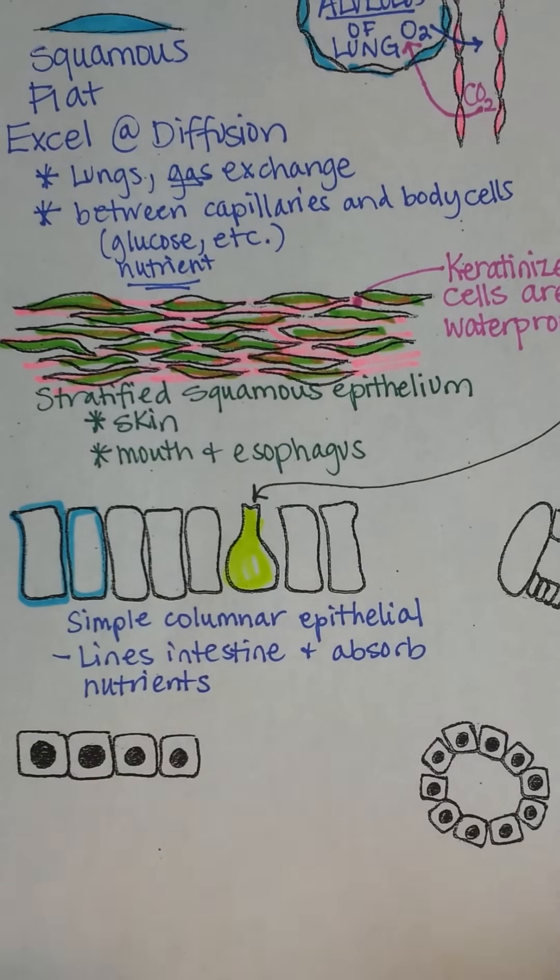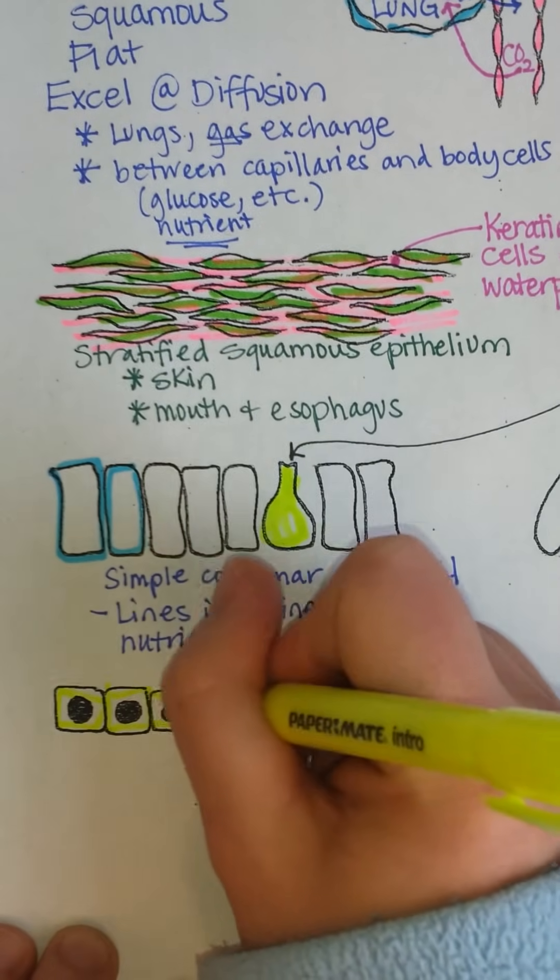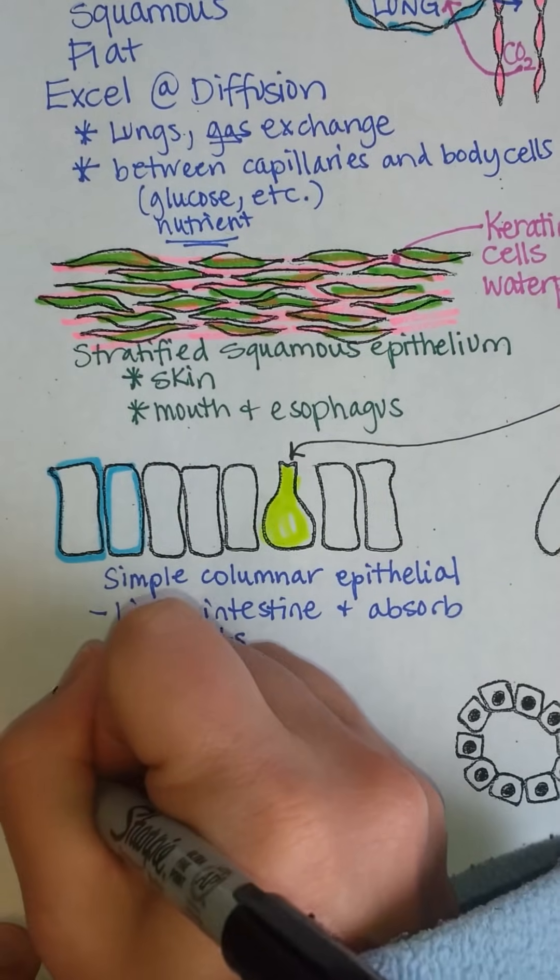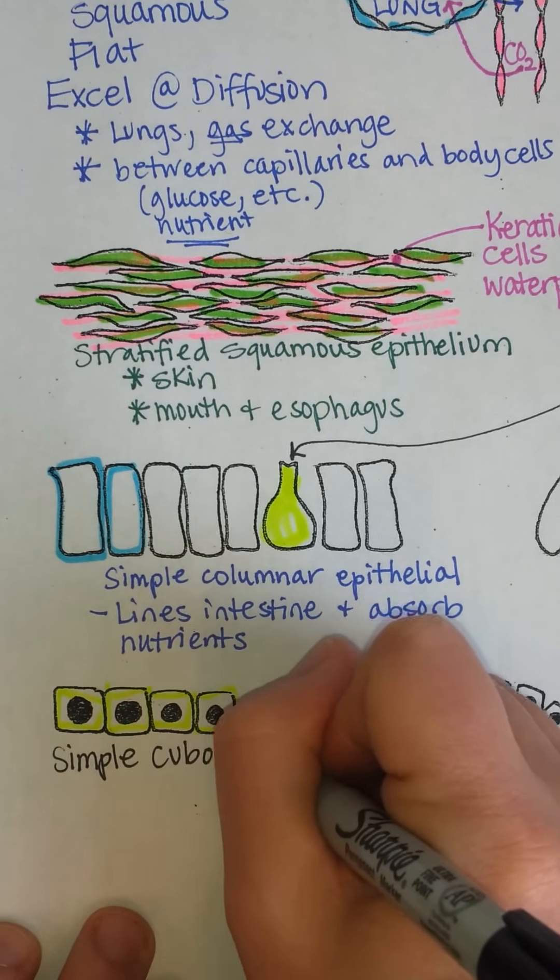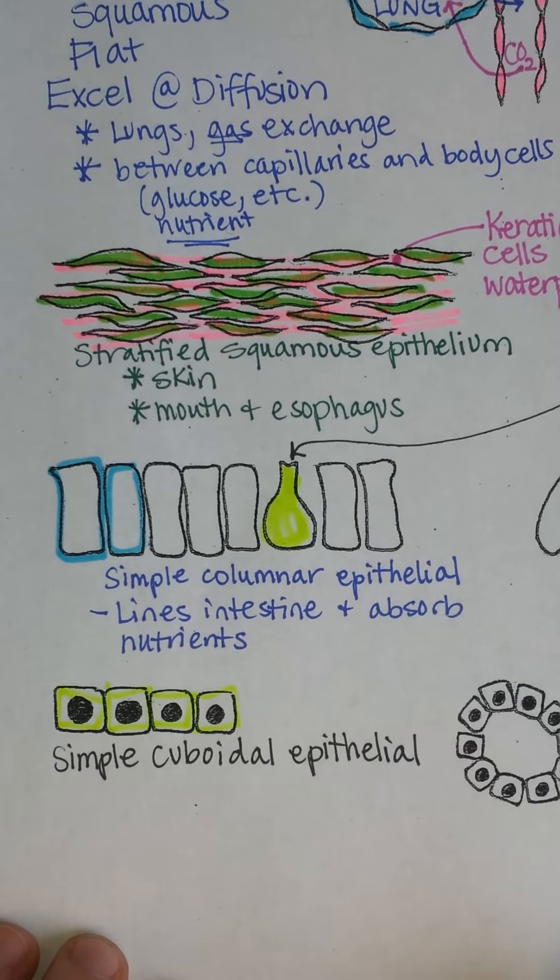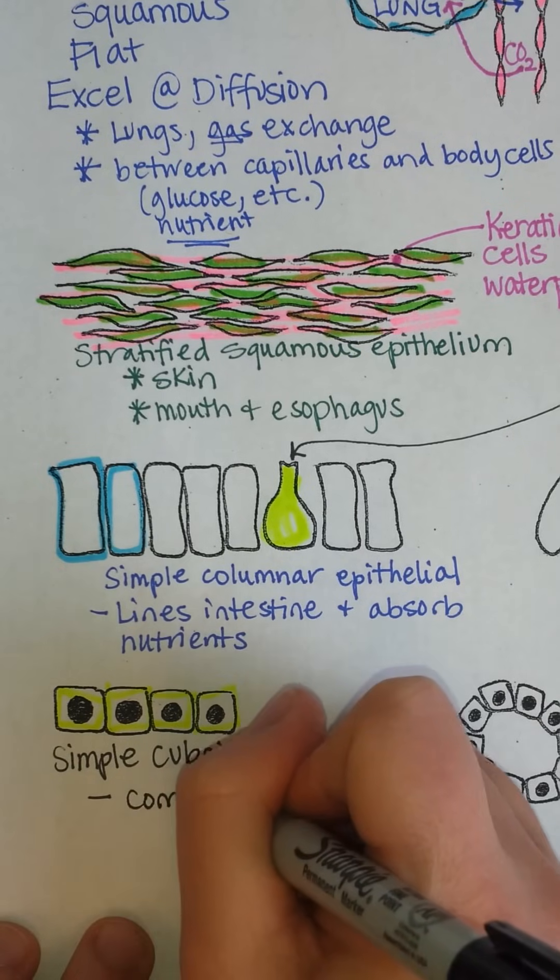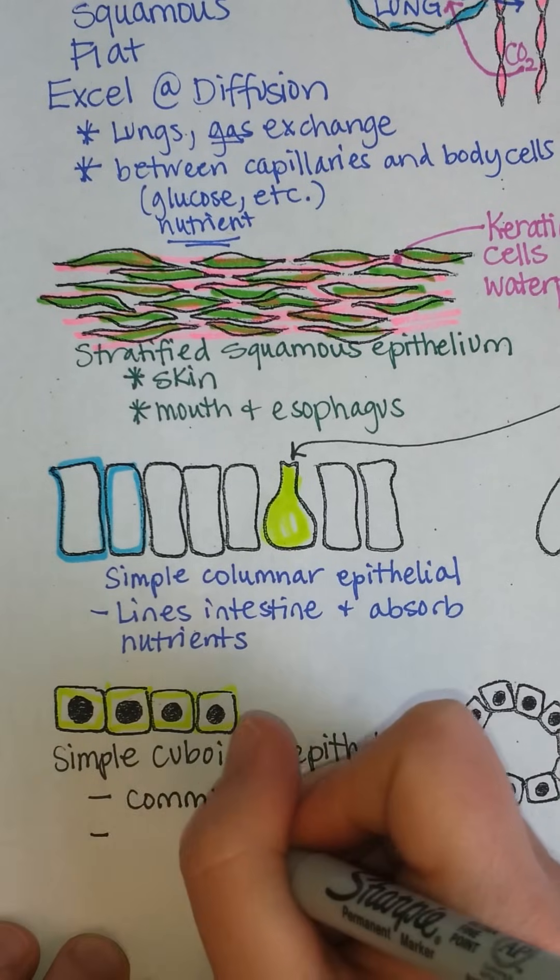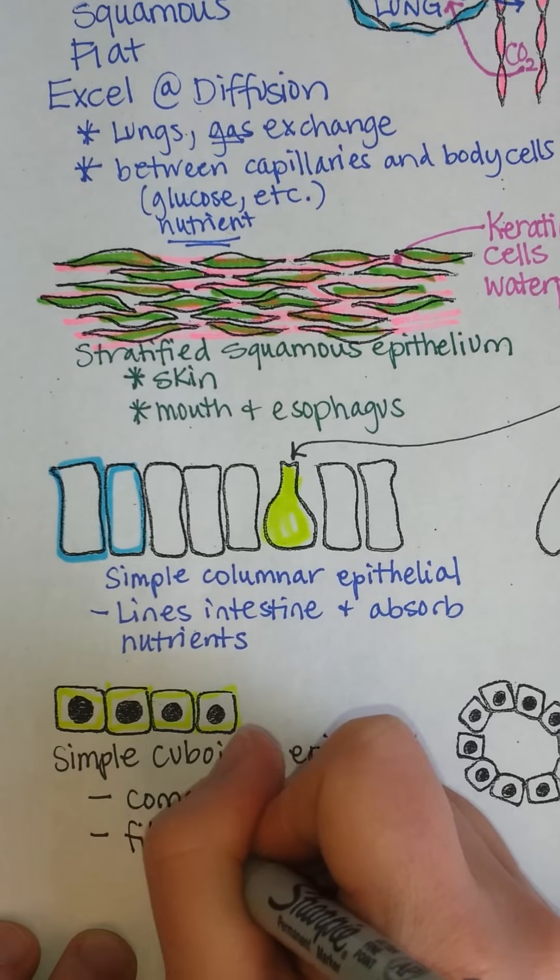Then last, there are these little boxy cells that make up some organs. And these are called simple, meaning they're in one layer, cuboidal epithelial cells. You can find these a lot in glands. They're common in glands such as the thyroid gland. They also make up the filters of the kidneys.